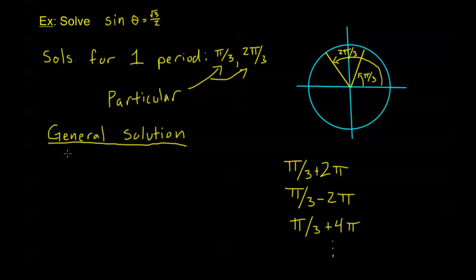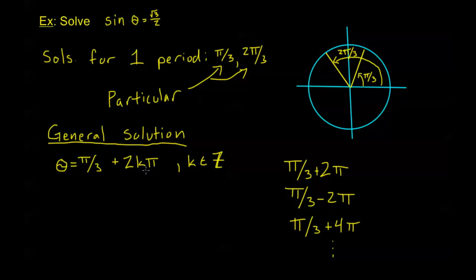To show this in a general solution, we say theta equals pi over 3 plus 2k pi, where k is any integer. If I plug in 0, I get pi over 3 — our particular solution. If k is positive 1, I get the first extra solution. If k is negative 1, the second, and so on. Because k is any integer, this gives all possible angles coterminal with pi over 3, and therefore all solutions associated with that particular solution. We had another particular solution: 2 pi over 3. So we also write theta equals 2 pi over 3 plus 2k pi, where k is any integer.